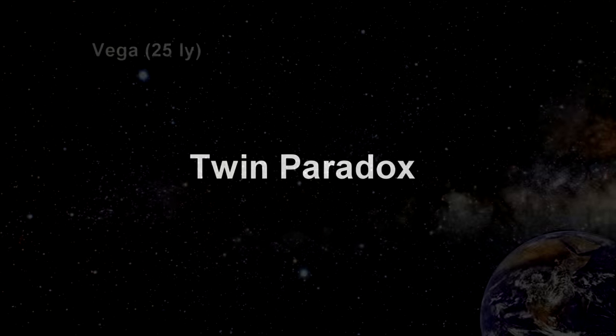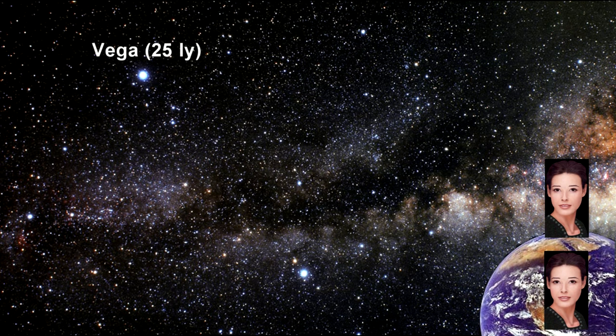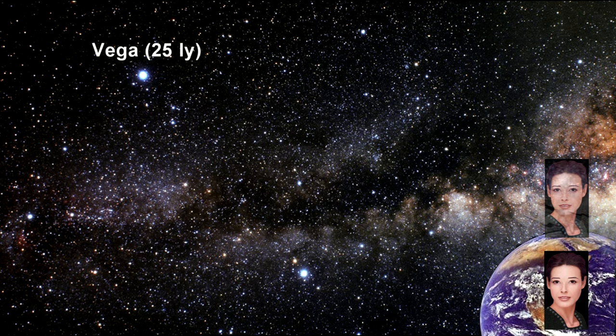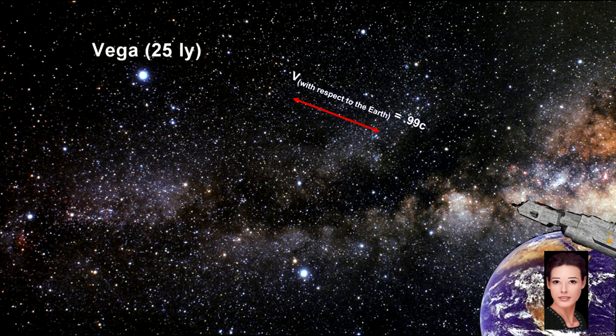We'll end this segment with a look at the famous twin paradox. It goes like this. Suppose two 20-year-old twins start out together on the Earth. One of them gets into a spaceship for a trip to Vega, traveling at 99% of the speed of light.